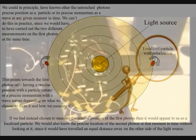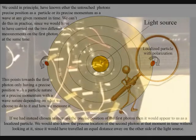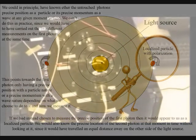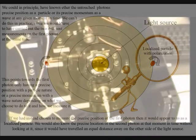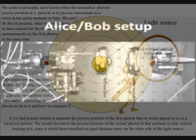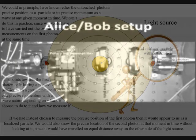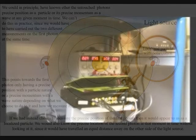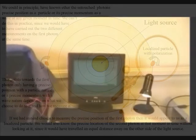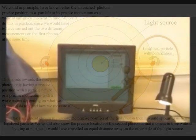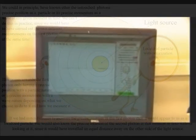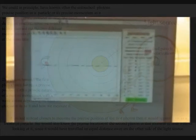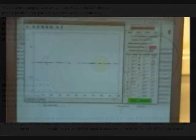It does not matter how far away the two photons are and we have not come in contact with the second photon at all. But we could in principle have known either the untouched photon's precise position as a particle or its precise momentum as a wave at any given moment in time. We can't do this in practice since we would have to have carried out the two different measurements on the first photon at the same time, but what is important is the second photon should have had a defined position and momentum.